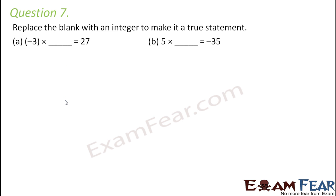Replace the blank with an integer to make it a true statement. Minus 3 into blank equals 27. The product is positive but one factor is negative, so the blank must also be negative — 3 into 9 is 27, so the answer is minus 9. In the next case, this is positive and this is negative, so the blank has to be negative; 5 into 7 is 35, so the answer is minus 7.